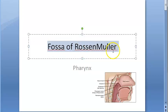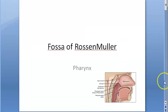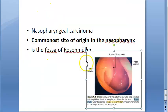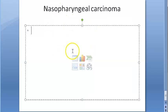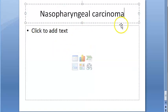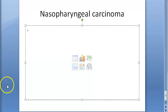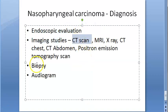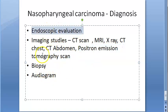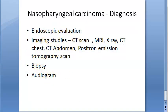So we started off with the fossa of Rosenmüller and have come so far covering carcinoma details. For diagnosis, you can do endoscopic evaluation, imaging with CT and MRI, PET scan, biopsy, and audiogram. There is also staging using TNM staging — that is tumor, lymph node, and metastasis.